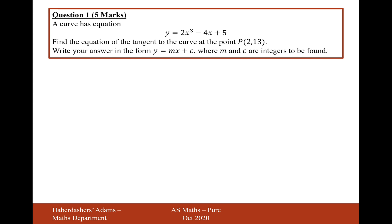A curve has equation y equals 2x cubed minus 4x plus 5. Find the equation of the tangent to the curve at the point P that is (2,13). Write your equation in the form y equals mx plus c.